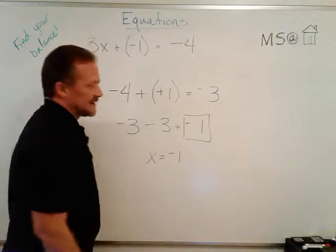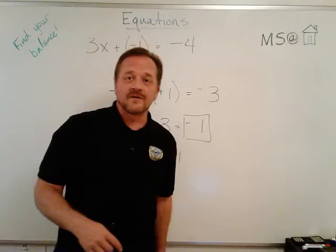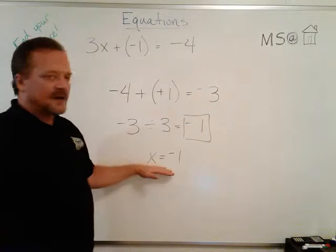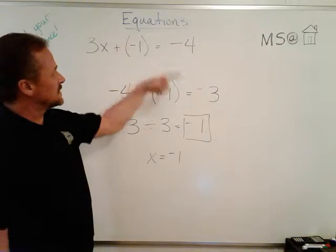So that means using backtracking we think John's mystery number is negative one. Now if you think back to the first lesson that we did, the first video on pan balances, that's what we got too. So it looks like the strategy works.